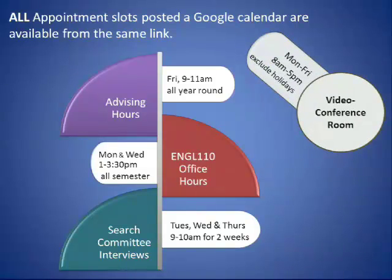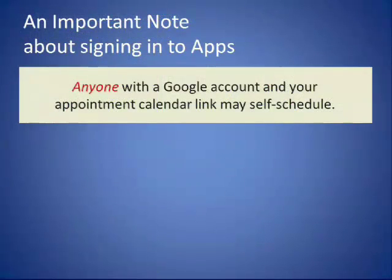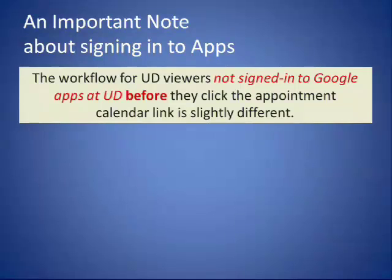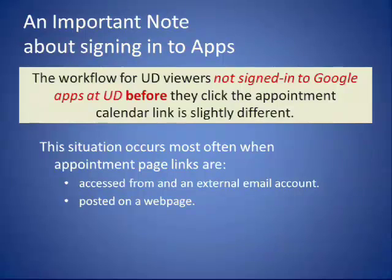Don't forget you can make additional Google Calendars if you need to, to schedule a video conference room or for specific tasks. An important note about signing in to Google Apps: anyone with a Google account and your appointment calendar link may self-schedule. That means someone not signed in to Google Apps — with just a Gmail account — could actually make a reservation. This situation occurs more often than you may think, usually when the link is accessed from an external email account or posted on a web page.